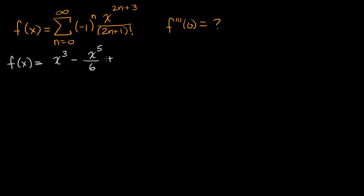When n is equal to two, this is going to be positive again. It's going to be x to the seventh power over five factorial, which is 120. And then it keeps going with alternating signs on and on forever.